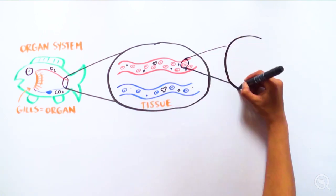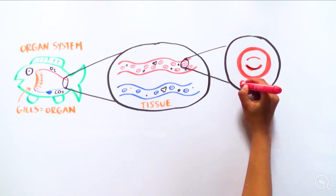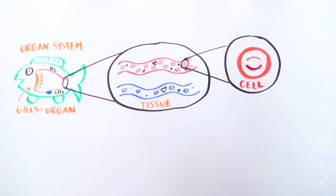Making up tissues are different types of cells, such as blood cells. A cell is the smallest unit of life and the most basic unit of biological organization.